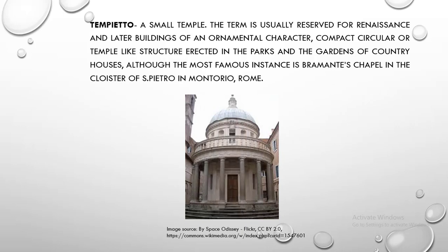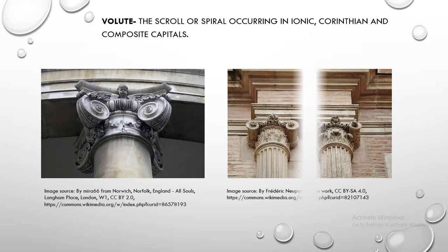Tempietto. Tempietto is a small temple. The term is usually reserved for Renaissance and later buildings of an ornamental character — compact circular or temple-like structures erected in the parks and gardens of country houses — although the most famous instance is Bramante's chapel in the cloister of St. Pietro in Montorio, Rome. Volute. Volute is the scroll or spiral occurring in Ionic, Corinthian, and composite capitals.